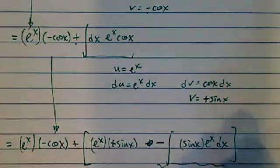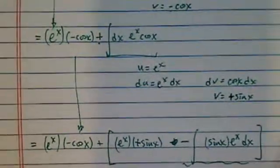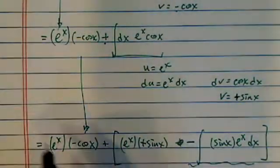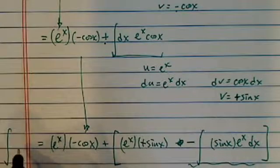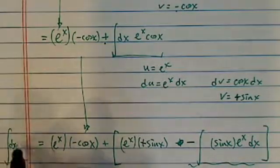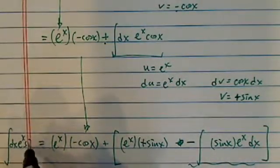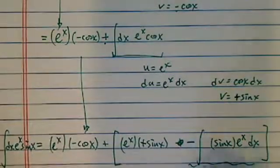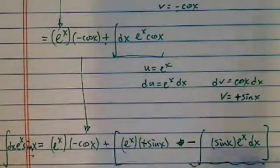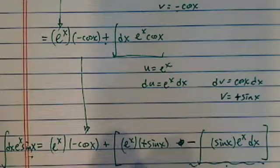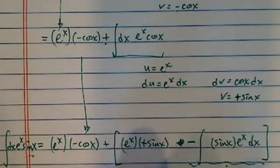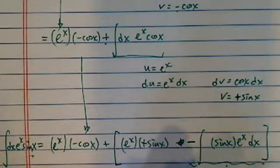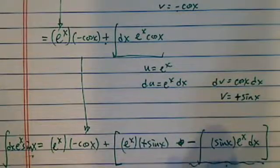The whole thing we're trying to find on this side is the integral dx e^x sine x. So sine x is here, sine x is here. Move this one over there, we have 2 times the integral dx e^x sine x equals...